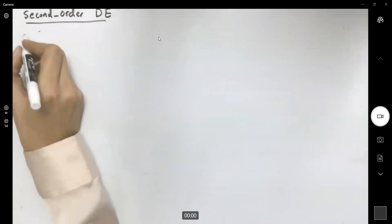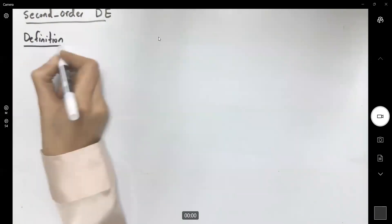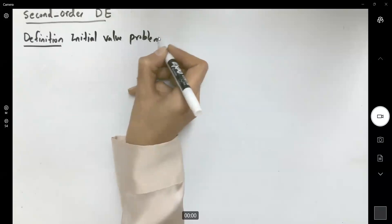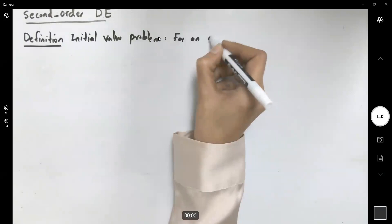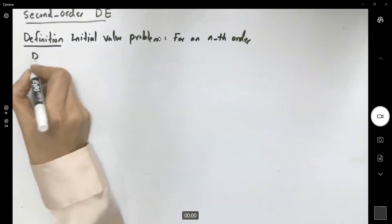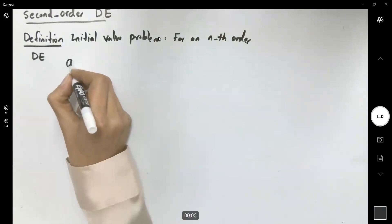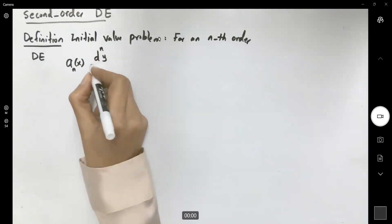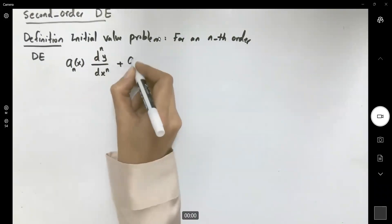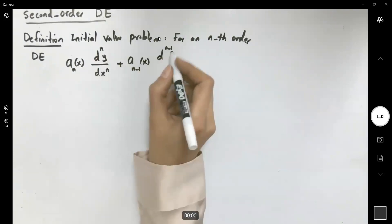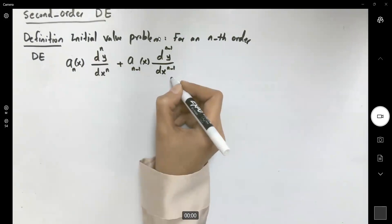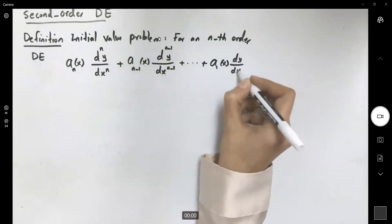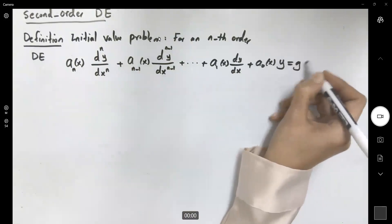First of all, recall that the initial value problem states that for an nth order differential equation, we have: a_n(x) times the nth derivative of y with respect to x, plus a_{n-1}(x) times the (n-1)th derivative of y, plus dot dot dot, plus a_1(x) times the first derivative of y, plus a_0(x) times y, equals g(x).